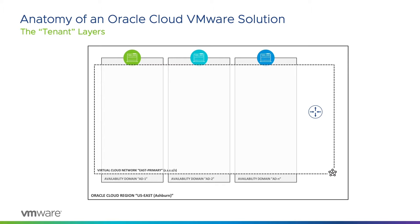We'll color it VMware Navy Blue. Logically, it sits outside the availability domains. In fact, let's just stretch it across all the ADs.